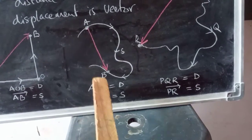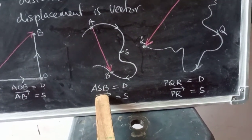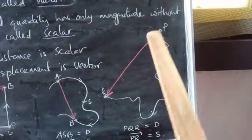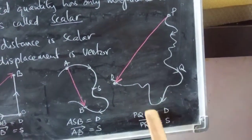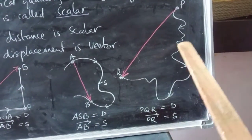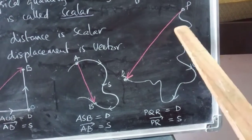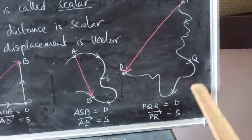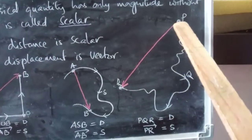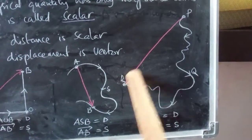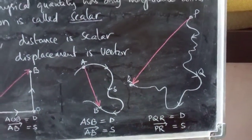When you reach A directly to B that is called displacement — that is why it is shown with an arrow mark. And here also with points P, Q, and R: the actual traveling path of an object has no particular direction but a long magnitude — that is called distance. But the short direct path from P to R is called displacement.